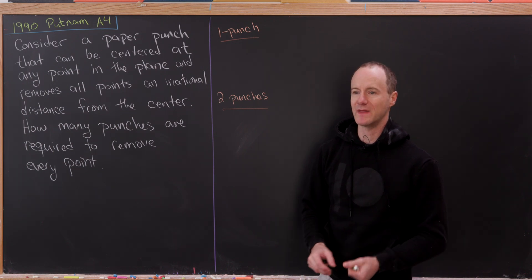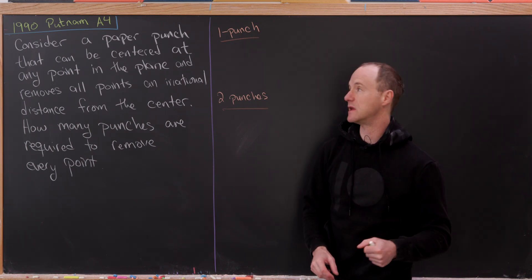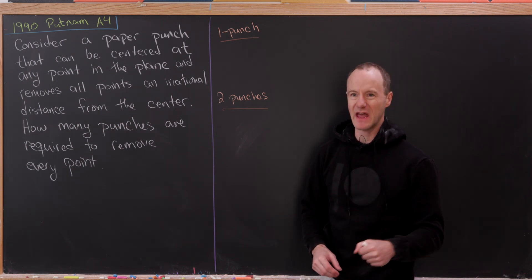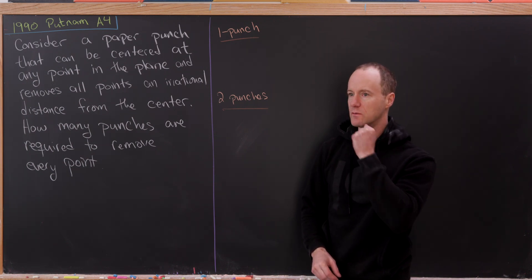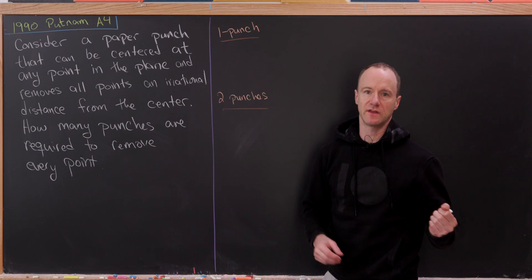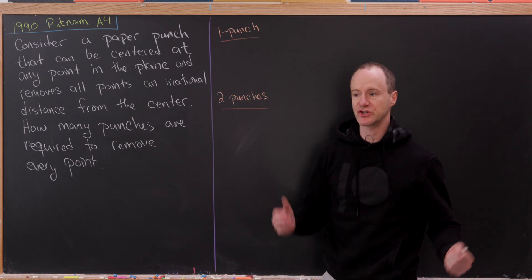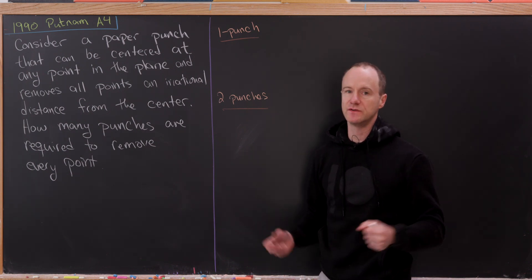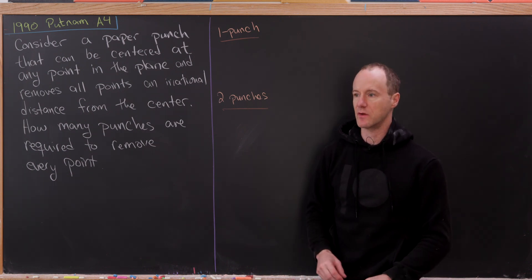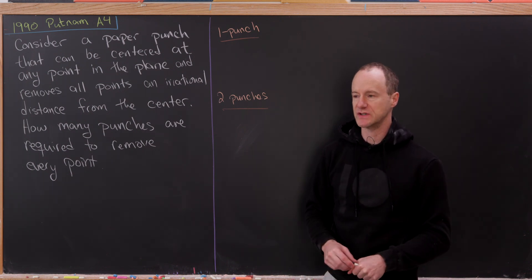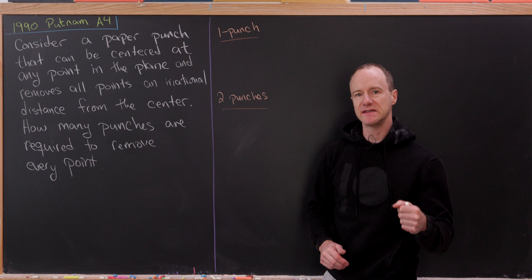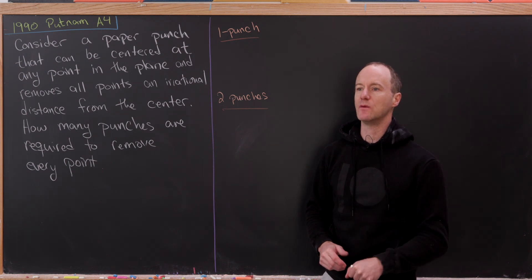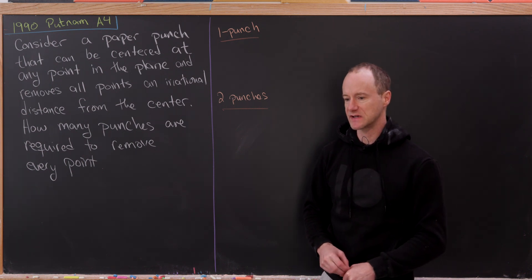Today let's look at this problem from the 1990 Putnam. This is problem A4. The morning session are the A questions and the afternoon session are the B questions, and they run A1 to A6 and B1 to B6.